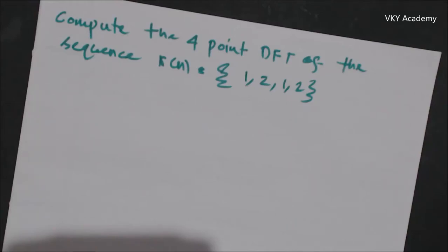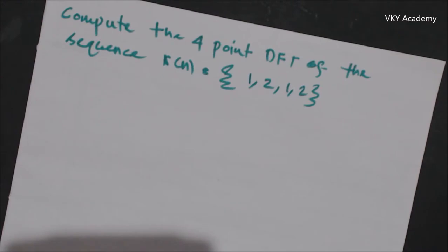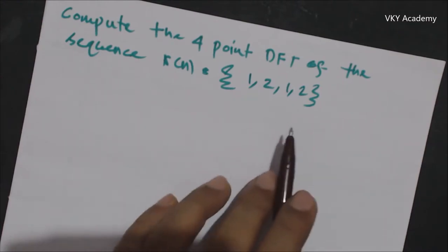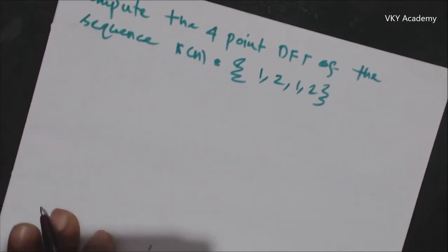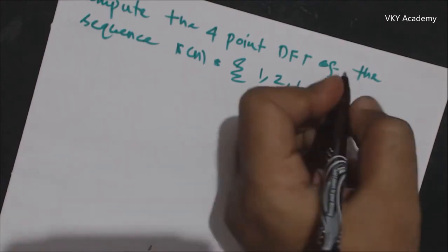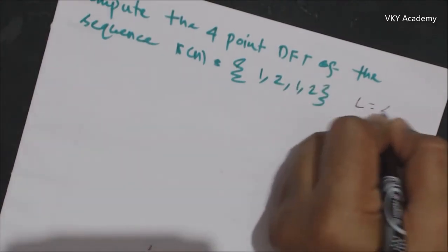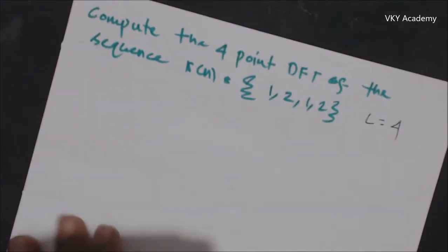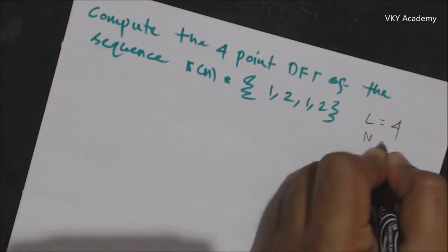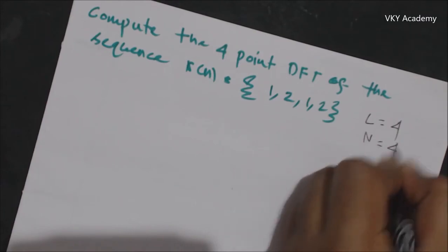In this video lecture, we will compute the 4-point DFT of the given discrete time sequence x[n] = {1, 2, 1, 2}. The length of the sequence is 4 and the DFT which we are going to calculate is 4-point, so we can say N is equal to 4.